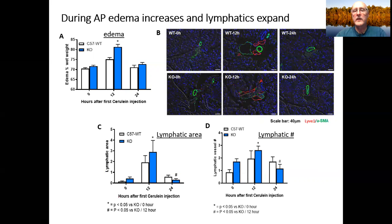In B, I would like to point out that we did staining for LYVE1, a lymphatic marker in red, and smooth muscle actin, a marker of blood vessels in green. If you look at the center column at the 12-hour samples, you will see that there was significantly more lymphatic staining than at either zero-hour or 24-hour.